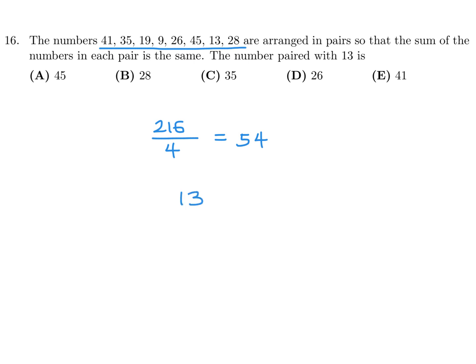What do you pair 13 with to get 54? 13 plus something equals 54, so that something is 41. Number 16 is E.